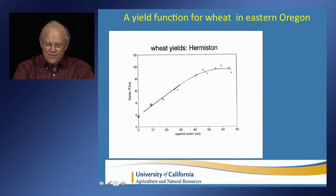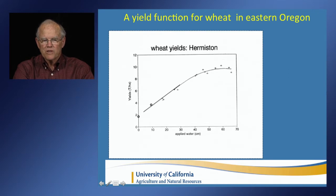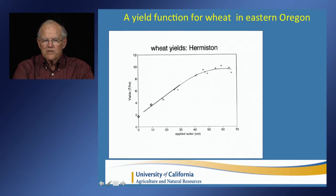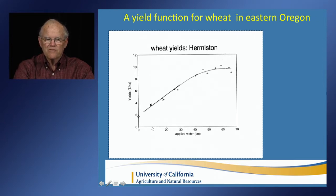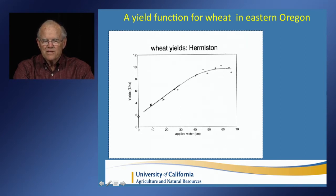I'd like to illustrate the logic of deficit irrigation with a few slides based on an experiment done in eastern Oregon, in which yield response to water was measured under 28 different irrigation treatments that varied in frequency and amount through the season. Frequencies ranged from one time during the season up to every other day. The amounts ranged from 20 percent of nominal water requirement to 100 percent. We fit a curve to the data — calling that the production function for the examples I'll be giving.